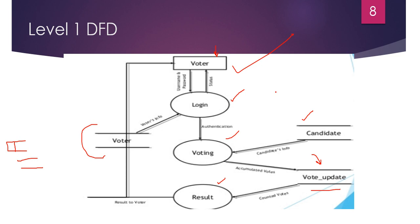Looking at the Level 1 DFD example: the voter's information is on the system. On the basis of that info, the voter will log in using a username and password. The voter can also check the status from the system. The downward arrow means the voter logs in via username and password; the upward arrow means the voter can see the status.